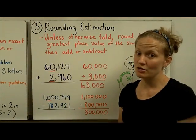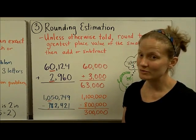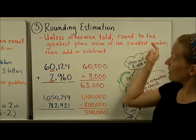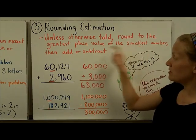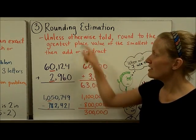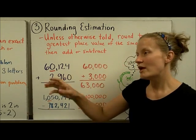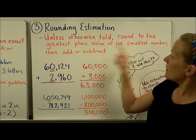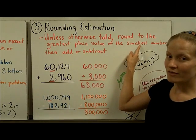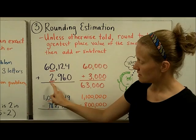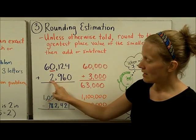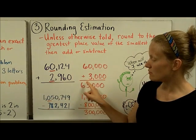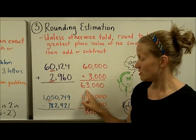The third way — and probably the way you're going to use most often and find most helpful and accurate — is rounding estimation. Unless otherwise told, when doing rounding estimation, round to the greatest place value of the smallest number, then add or subtract. Sometimes a problem will tell you to round to a specific place, but if not, look at your smallest number and round all of them to the place value that number falls in. In this case, 2,960 is my smallest number; it falls in the thousands place, so I round both numbers to the thousands place. This one rounds to 60,000 and this one to 3,000, giving an estimated sum of 63,000.